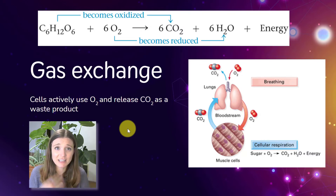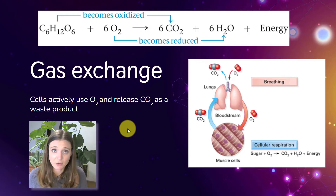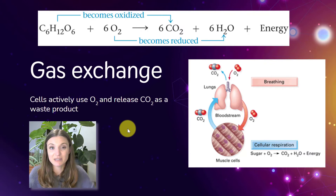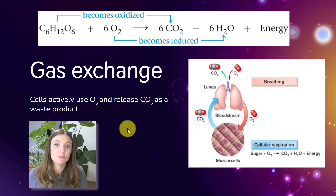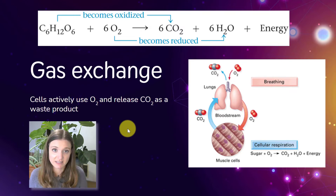Cells are constantly using up oxygen, converting it to water, and constantly producing carbon dioxide as they go through aerobic cellular respiration. This is why we need to breathe — we need to get rid of that carbon dioxide waste and bring in new oxygen so that cellular respiration can keep going. Oxygen is converted eventually to water, and the carbon in carbon dioxide was the carbon that was in the food that you ate.